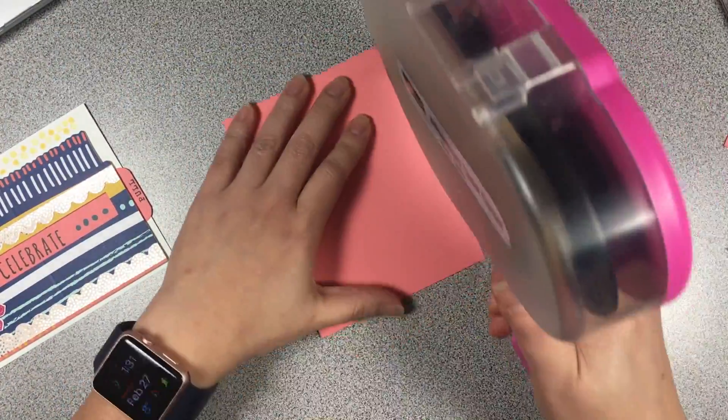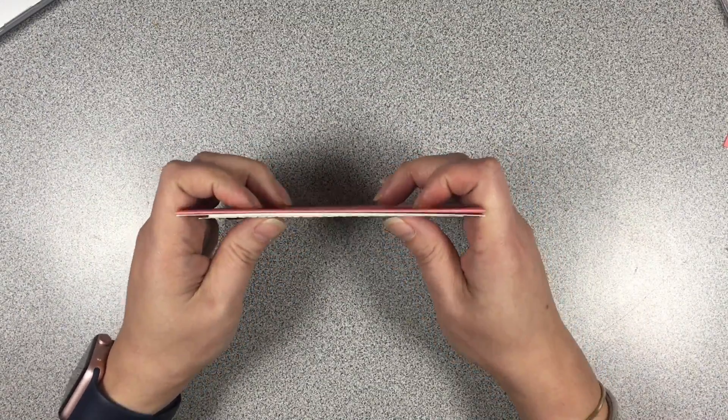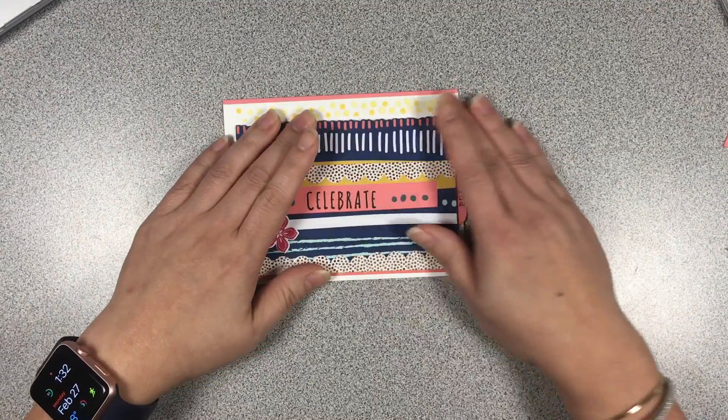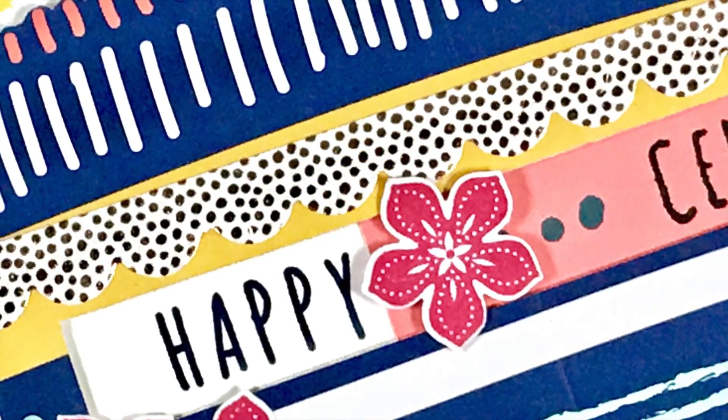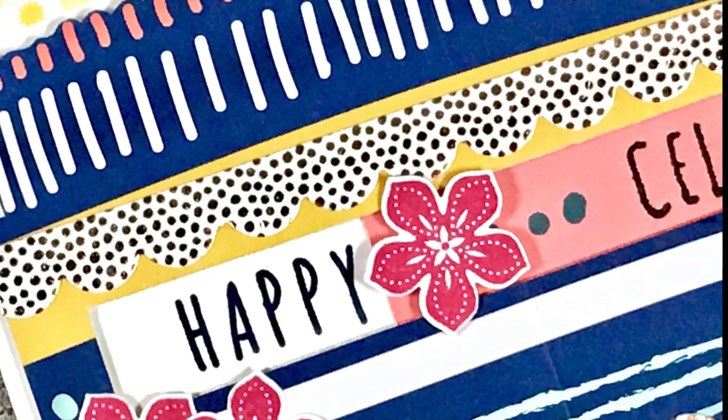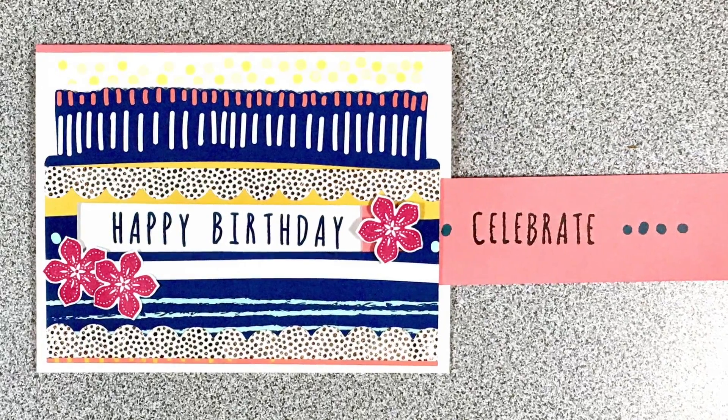Now we're just going to adhere it to the card base. Just so you know, I did remove a good one-sixteenth of an inch off the top of the white panel just so that we have some Flirty Flamingo peeking out at the top there. I thought it added some additional interest to it. I'm hoping you're enjoying these stills.